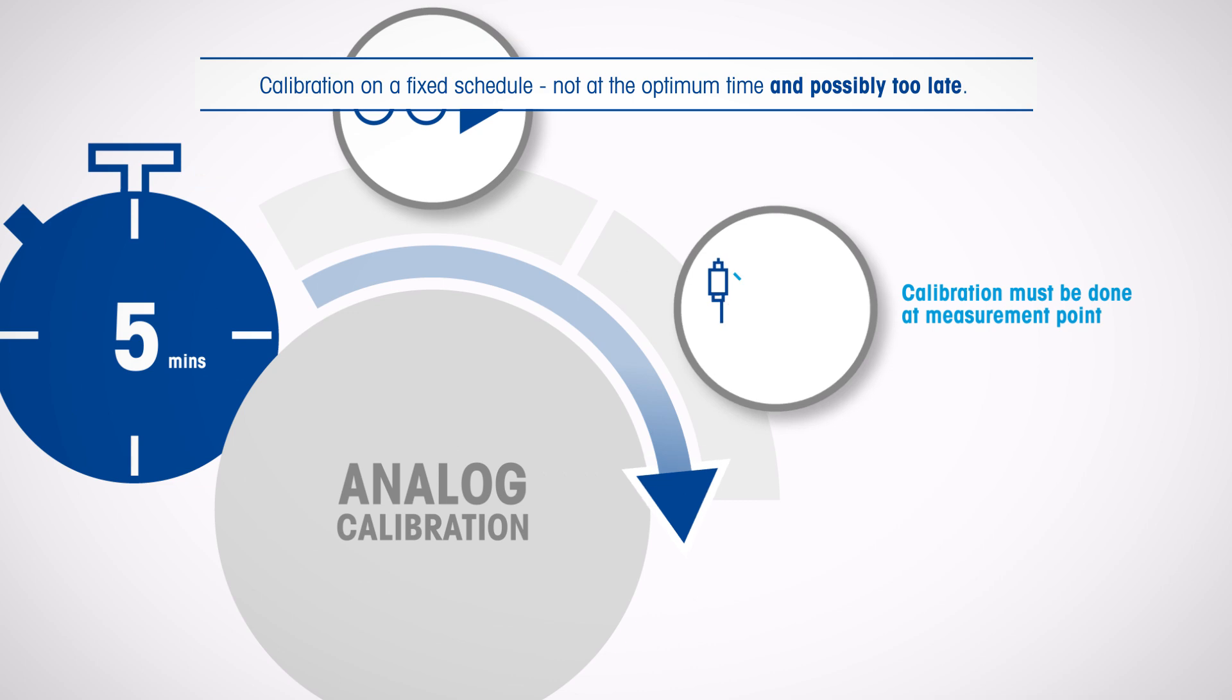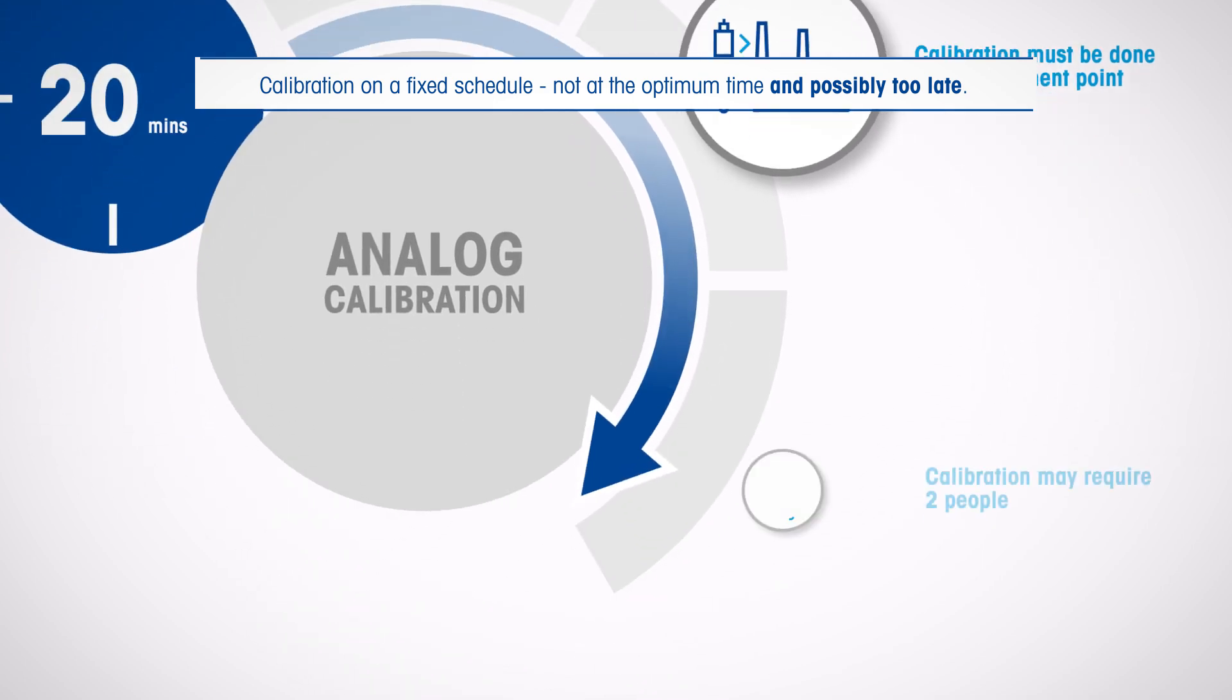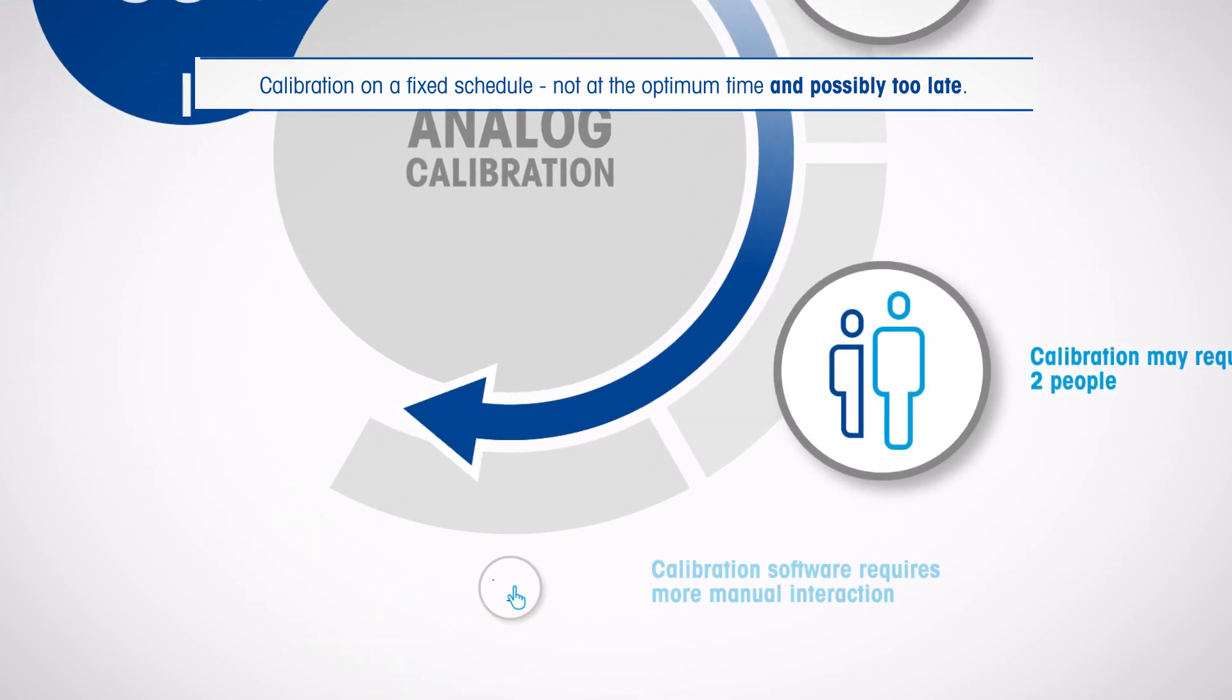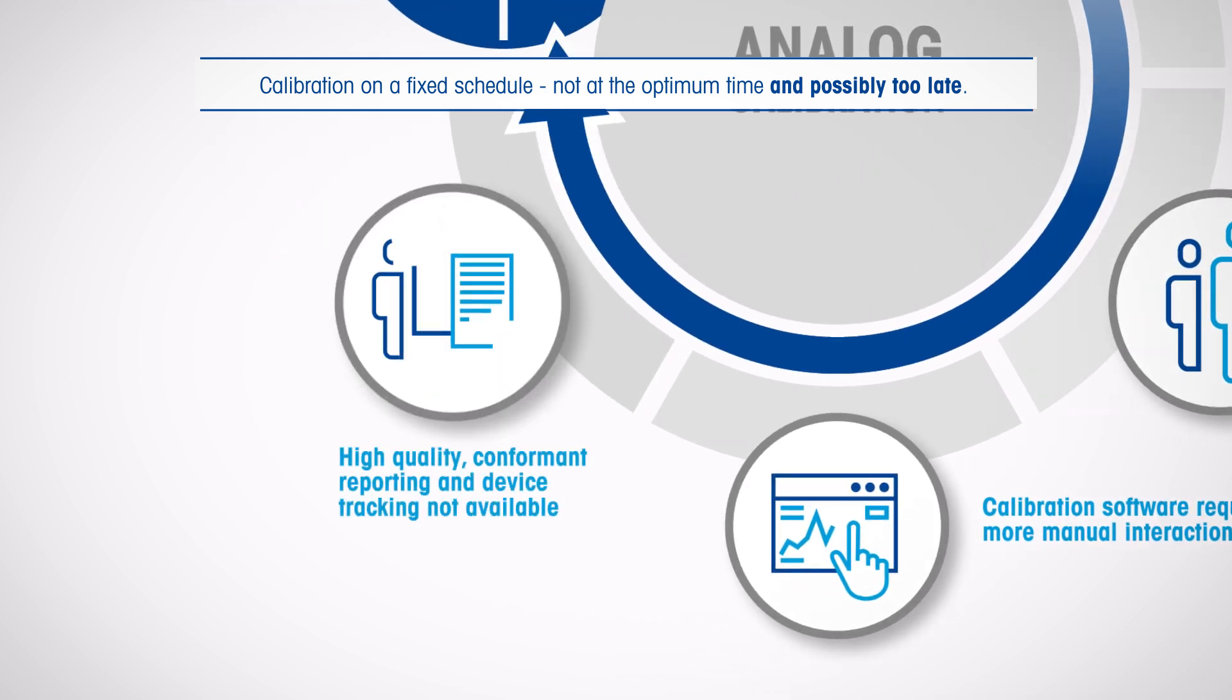Calibration of analog sensors is done at the measurement point, normally to a fixed schedule. It is time-consuming and can be inaccurate, with results that are harder to trace.